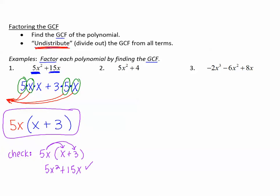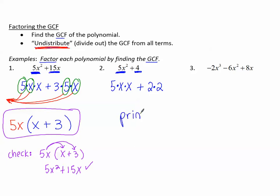Let's look at number 2. 5x squared, the first term, can be written as 5 times x times x. Positive 4 can be written as positive 2 times 2. But I don't see anything in common between the first term and the second term, so this one cannot be factored — this one is prime.